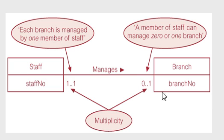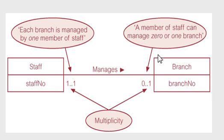So that's how we can read it, and these are called multiplicity numbers. In the squares you have the entities. Sometimes you'll see it with the primary key listed, sometimes you'll see all the attributes listed, and sometimes you won't see any — just a square with the table name. But you should definitely have at least the table name listed inside the box, and that's the entity.